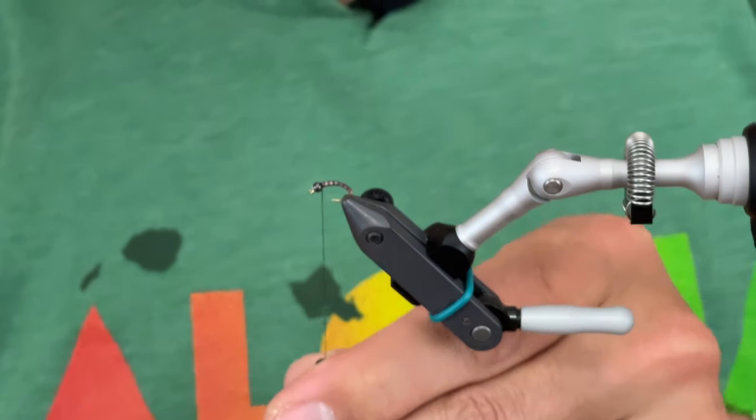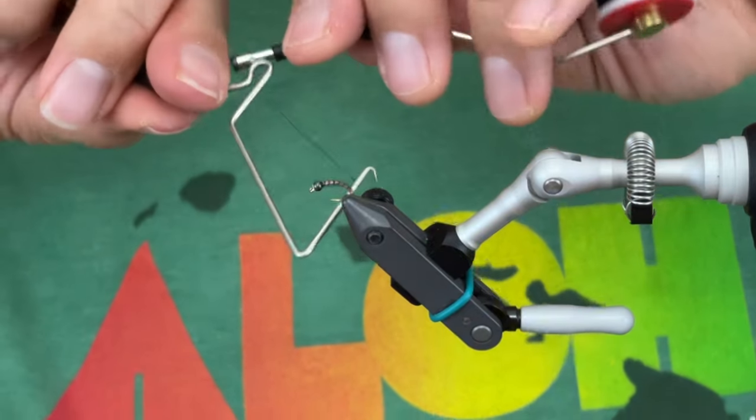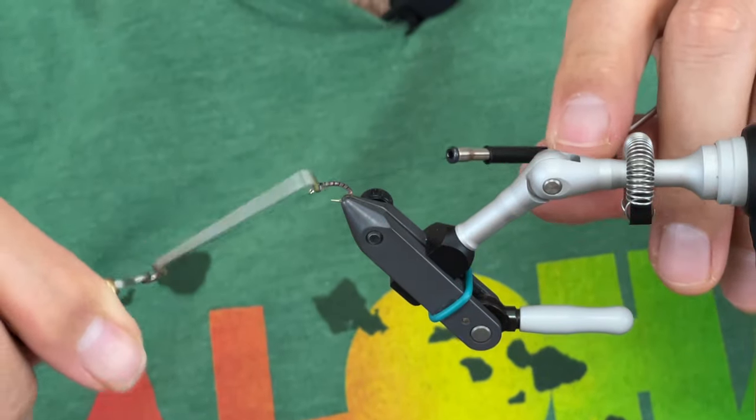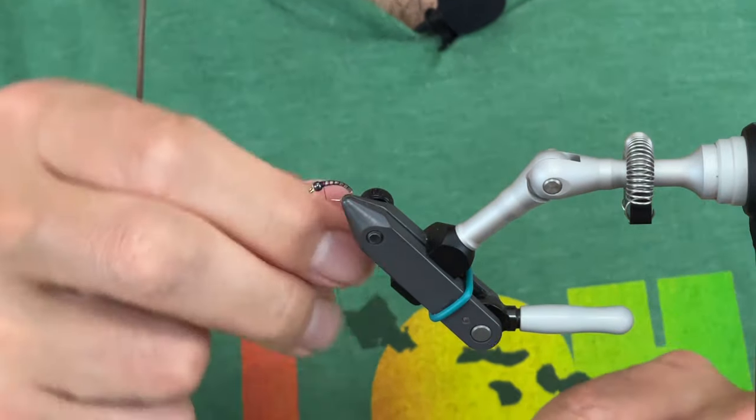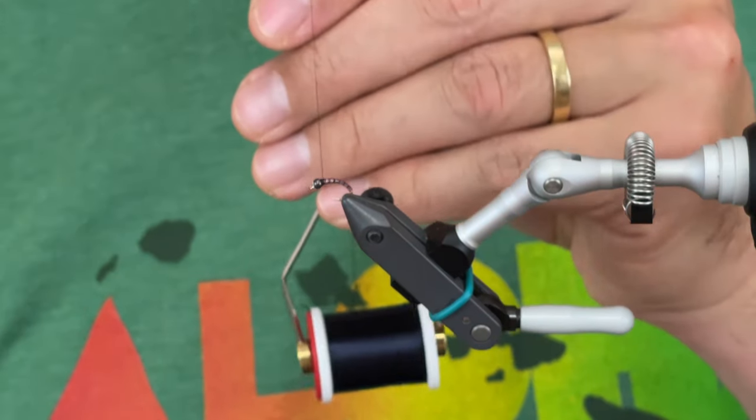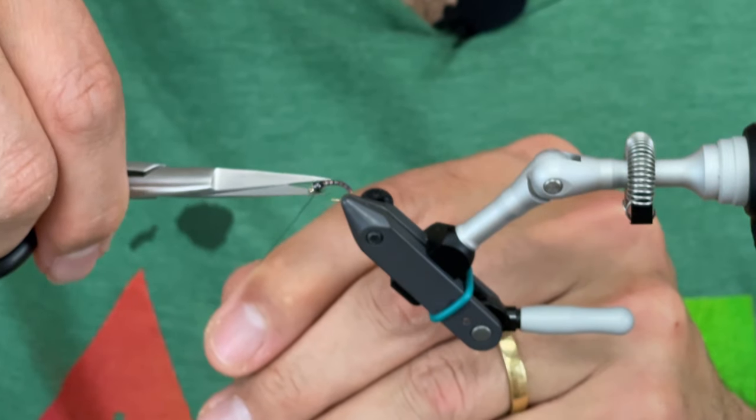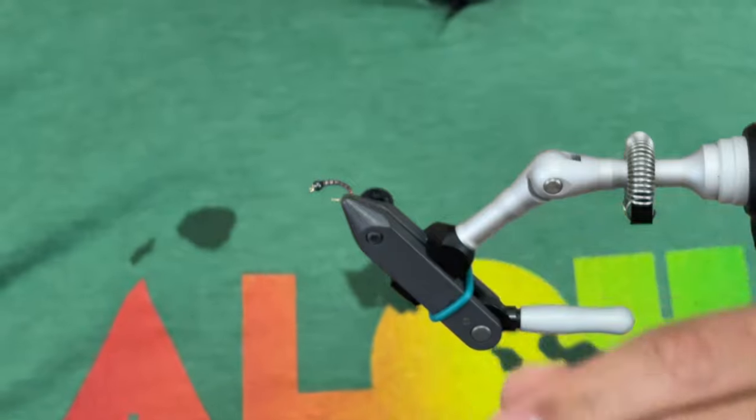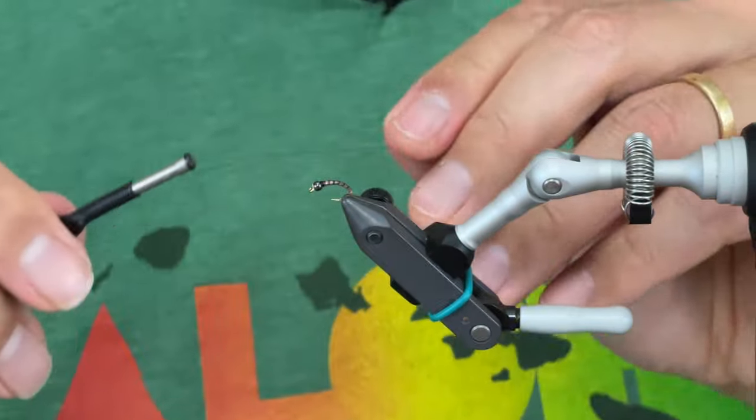Then grab your whip finisher. Come in. Give yourself one, two, three, four. You can take that off. Get that nice and close so you don't have any loose ends. What you're going to do now is take your UTC 70 in rusty brown. One, two, three. Add the fourth one over it like that.